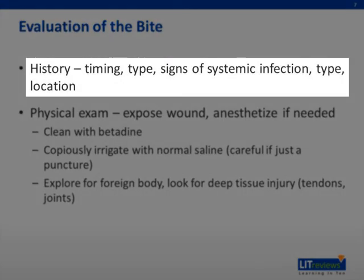When a patient presents with mammalian bites, obtaining a history is essential. One needs to elicit when the bite occurred and what kind of mammal caused the injury. Ask if the patient knew the animal, as this is often important for the decision to give rabies prophylaxis. Additionally, ask about signs of systemic infection such as fevers, chills, or sweats, as this can guide whether to start antibiotic therapy.